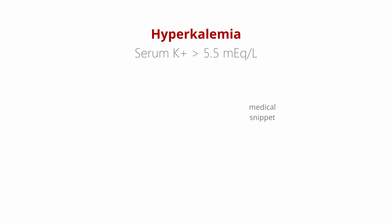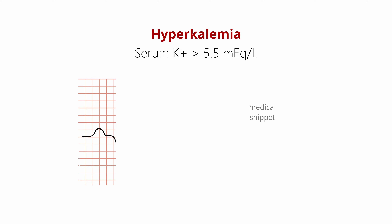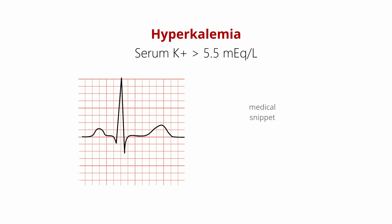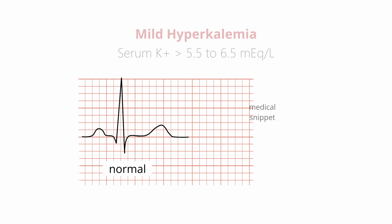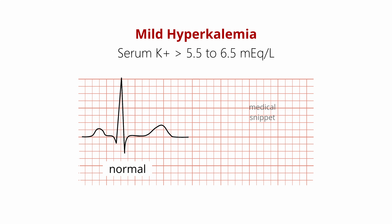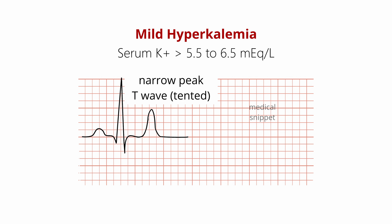Hyperkalemia is defined as serum potassium concentration greater than 5.5 milliequivalents per liter. The earliest sign of hyperkalemia in ECG is narrowing and peaking of the T-wave, which is called tenting of T-wave.